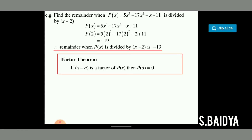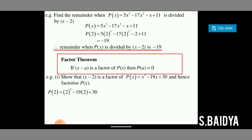Now let us show that x minus 2 is a factor of p(x) where p(x) = x³ − 19x + 30, and hence factorize p(x). We test it using the remainder theorem: p(2) = 2³ − 19(2) + 30, which equals 0. Since the remainder is 0, x minus 2 is a factor of p(x). We then divide p(x) by x minus 2.